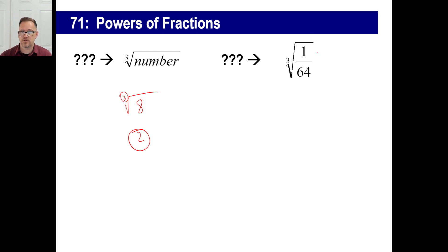So you'd go, well, I'll just do the top first. The cube root of one is one. The cube root of 64 is what times itself three times gives you 64? Four.